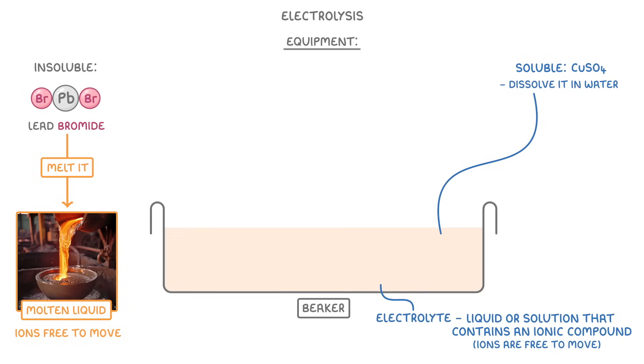So if we change our electrolyte to be molten lead bromide, then it would contain positive lead ions and negative bromide ions, both of which would be free to move about.